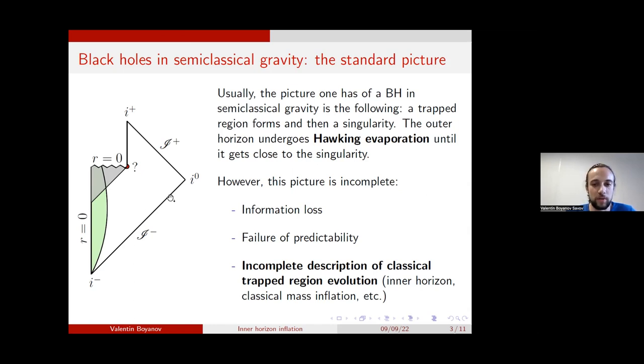Now, this picture has some issues. It's incomplete. The first issue is the fact that information is lost in the space-time. Everything that falls into the black hole is never recovered again. Which, for the purposes of evolving quantum systems, means that there's a problem with their unitary evolution. There's also a failure of predictability, because at this point here, singularity touches the outside universe. And, well, that's not well described by semi-classical theory.